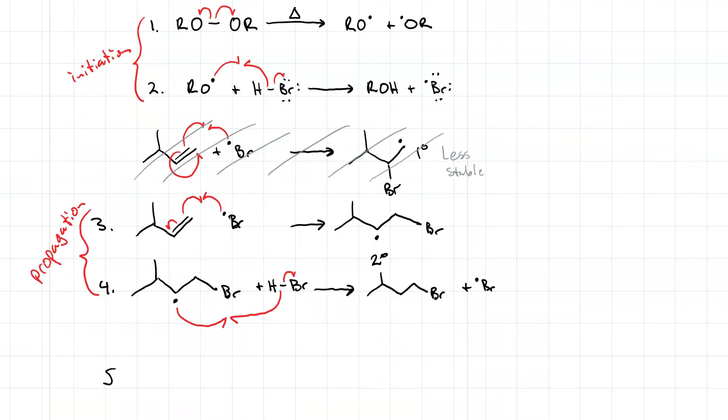Of course, we need to stop the chain reaction. So step 5 is termination, and one way to do it is just by the coupling of two bromine radicals. But we could couple any two radicals that form over the course of this mechanism. In this case, we couple the two bromine radicals and we get Br2.